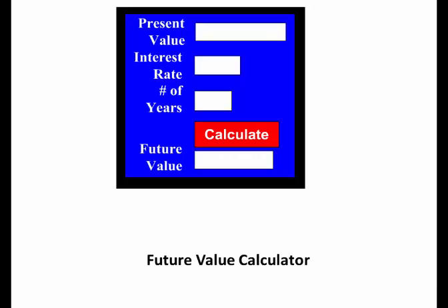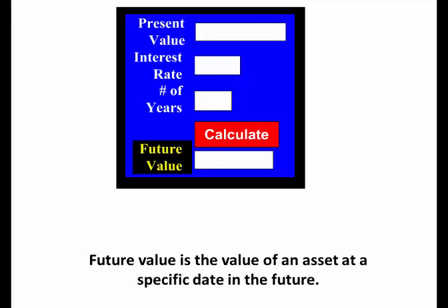Future Value Formula. This is the Future Value Calculator. You have the present value of an asset or some amount, the interest rate, the number of years, and when we calculate it, we'll get the future value. The future value is the value of an asset at a specific date in the future.